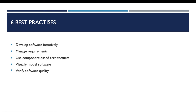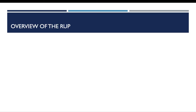The fifth best practice is the verification of software quality. Quality assessment is built into all activities of the process, involving all participants, and uses objective measurement and criteria. Finally, the sixth best practice is the control of changes to software. The process describes how to control, track, and monitor changes to enable a successful iterative process.